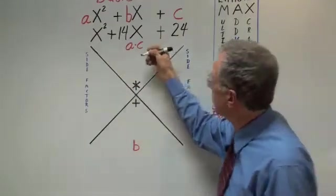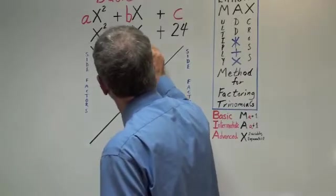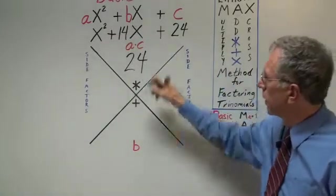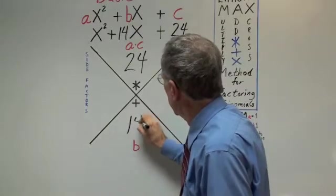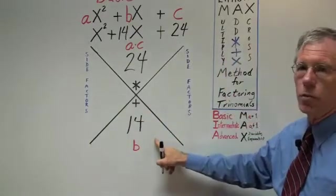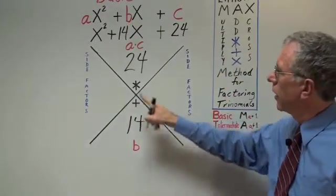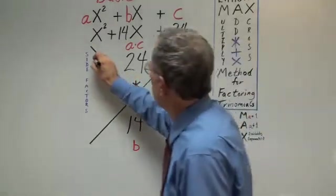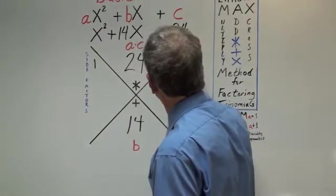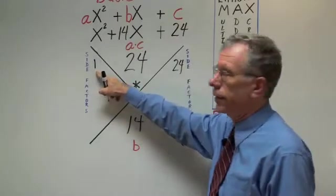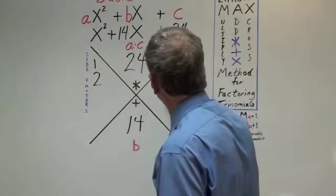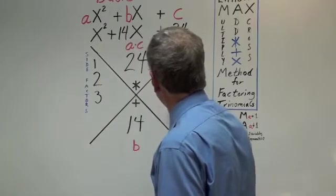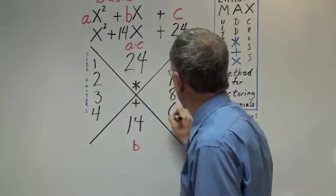Since a is 1, it will just be c, 24. Then we bring down the b to the lower area, which becomes 14. Now we must create the side factors, where you multiply 1 times 24, and always start with 1 here, 2 times 12, 3 times 8, and 4 times 6.